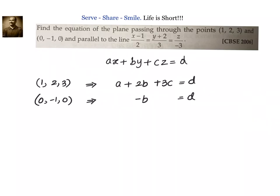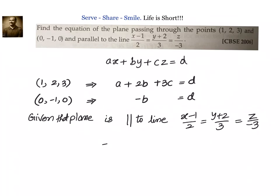And we have another condition that the given plane is parallel to the line, which means that the normal of the plane is perpendicular to this line. In that case, our condition will be 2a + 3b - 3c = 0.